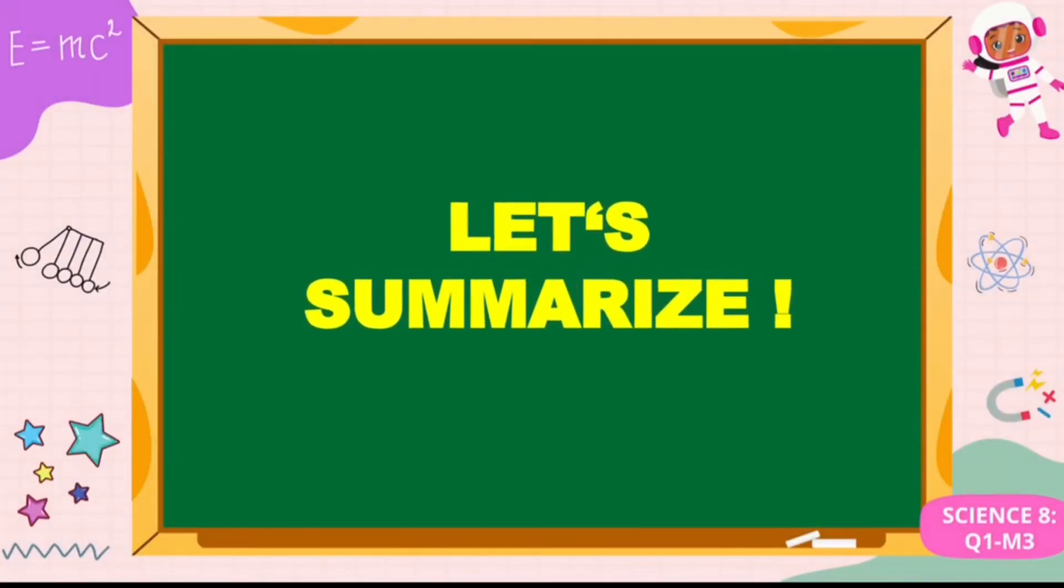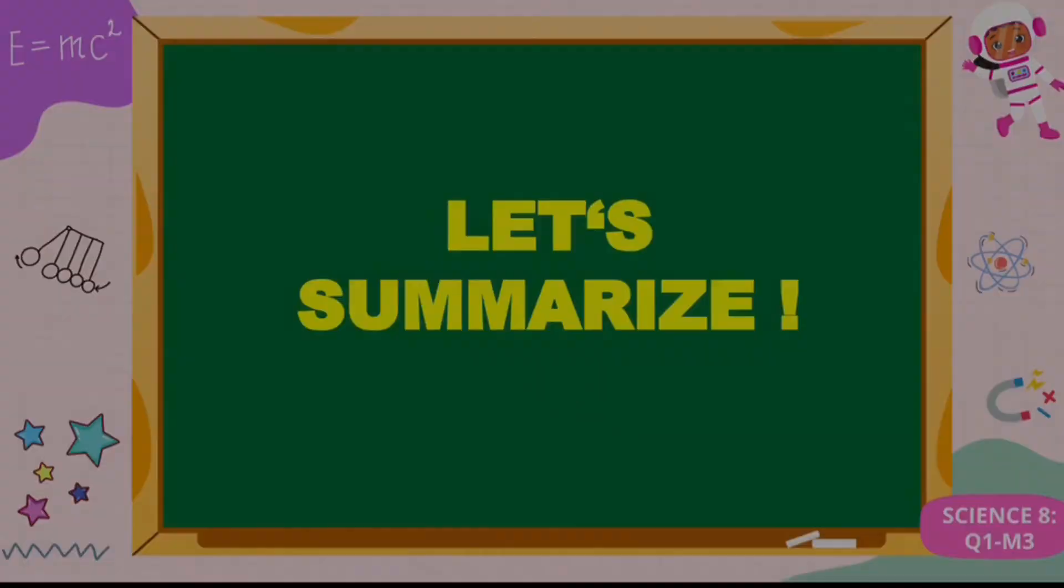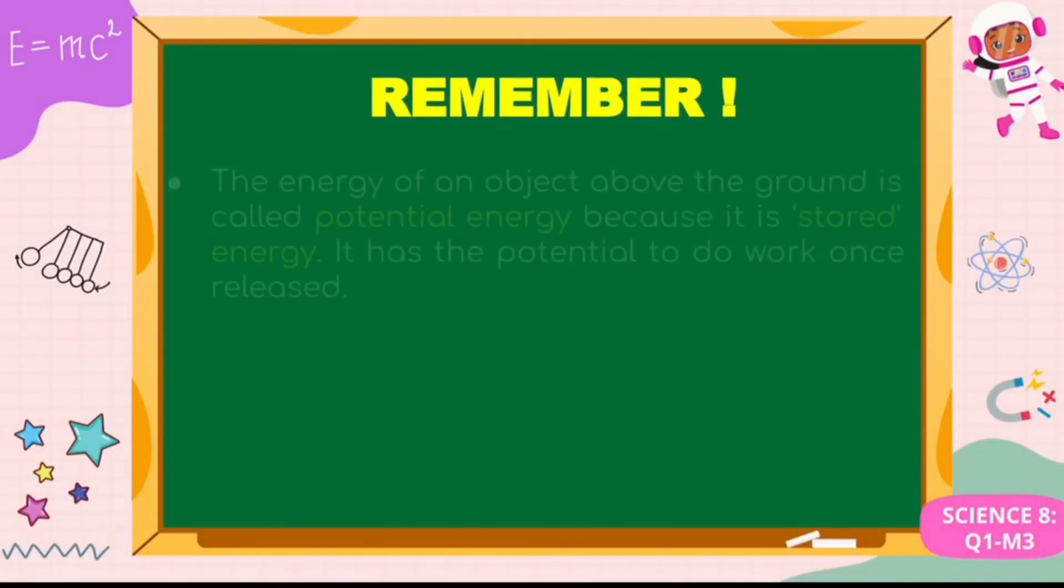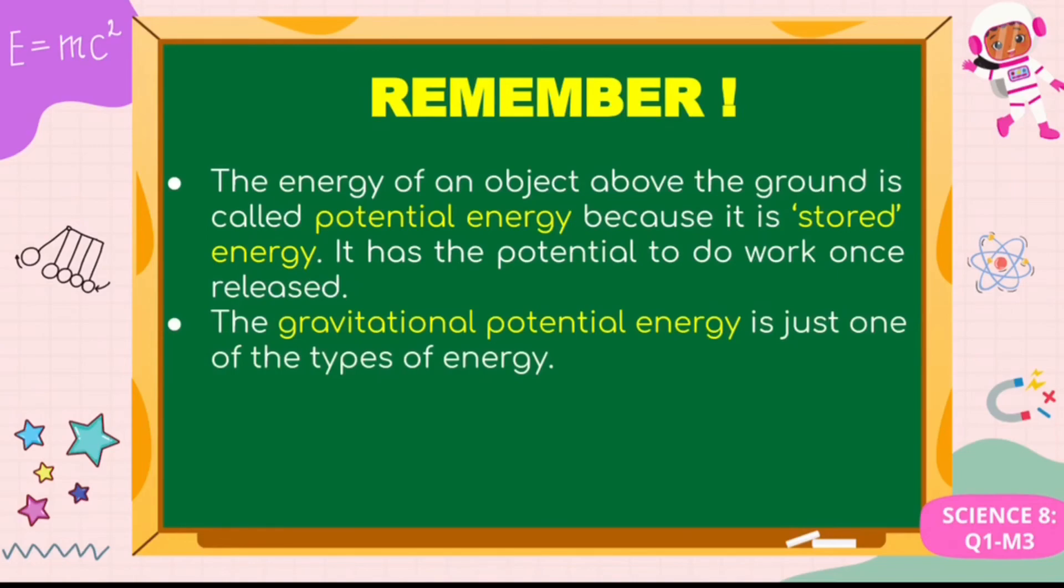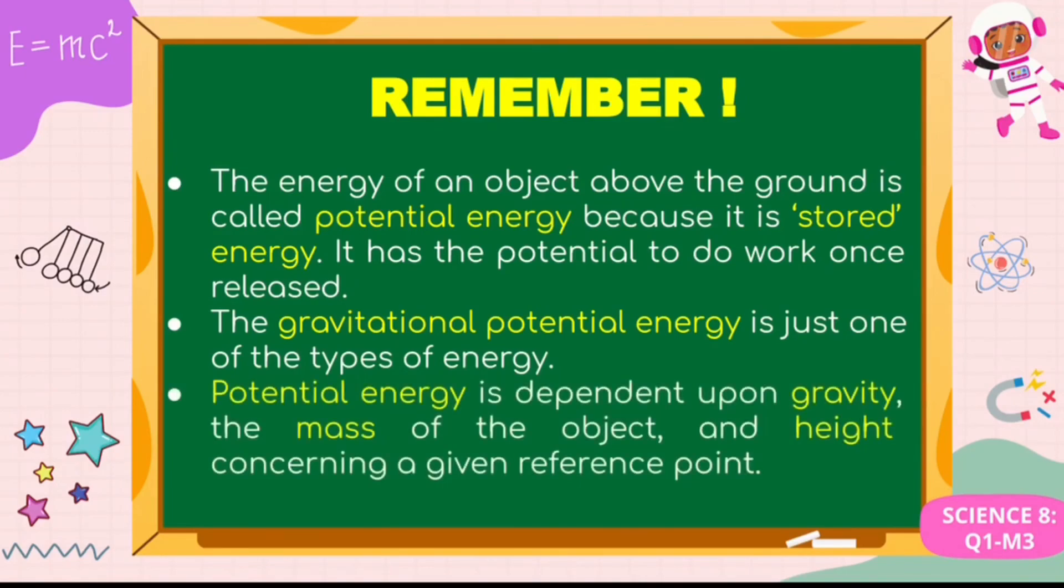Now let's summarize. Remember, the energy of an object above the ground is called potential energy because it is stored energy. It has the potential to do work once released. The gravitational potential energy is just one of the types of energy. Potential energy is dependent upon gravity, the mass of the object, and the height concerning a given reference point.